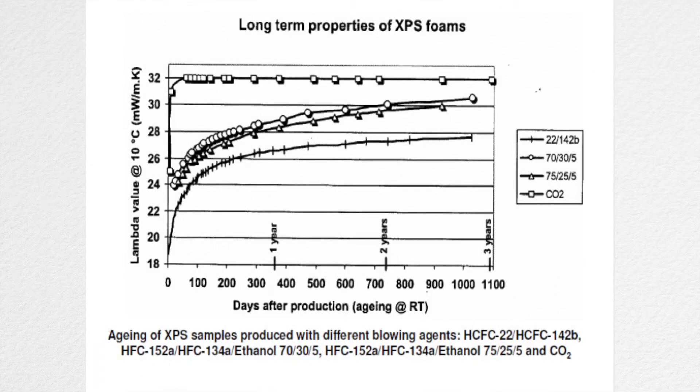But how does the standard have something to do with the recipe of your balloon agent? The reason is that using different balloon agents can result in different thermal conductivity of your final product. For example, when you use HCFCs or HFCs, you can control the lambda value below 0.029. However, if you use CO2 plus ethanol, it's hard to make the lambda value under 0.033.